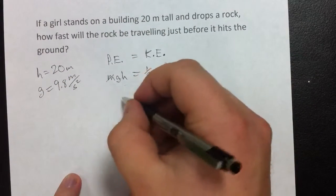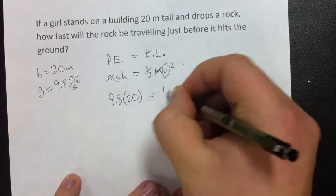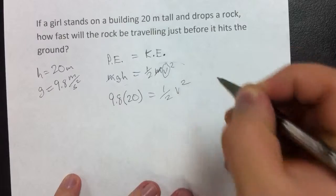Gravity is 9.8 meters per second squared. So, we'll take our gravity, which is 9.8 times 20, is equal to one-half velocity squared.